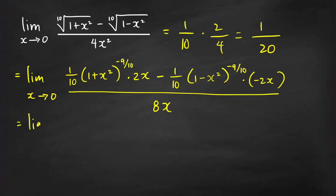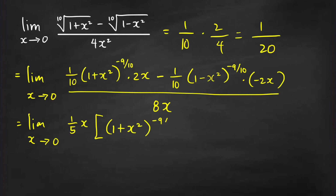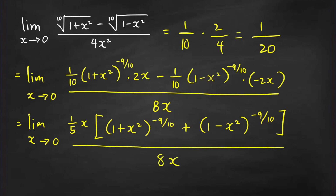We can write the numerator as the limit as x goes to 0 of 2x times 1 over 10, which is 1 over 5x. So let's factor out 1 over 5x from both terms in the numerator. We have (1 plus x squared) raised to negative 9 over 10, and also from the second term — negative 2x times negative 1 over 10, which is positive 1 over 5x — we get the remaining factor: (1 minus x squared) raised to negative 9 over 10. All over 8x. We have a common factor x, so we cancel it and replace by 1.